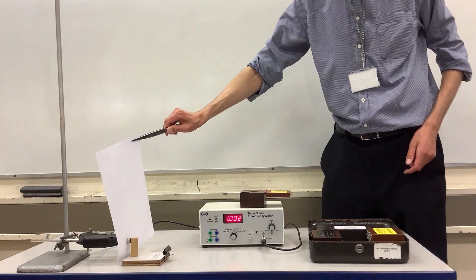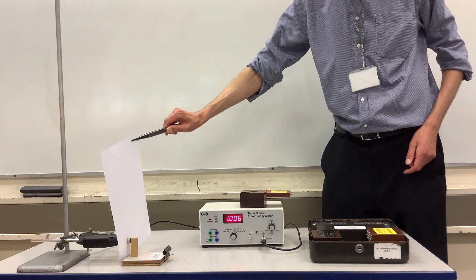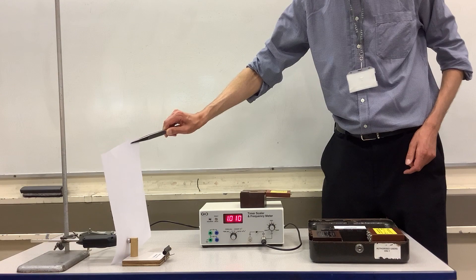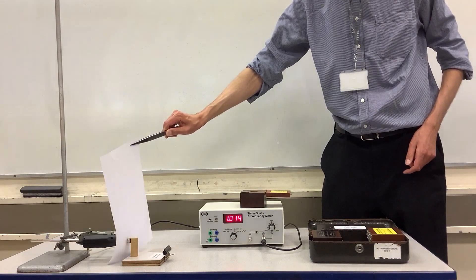So we can see alpha radiation has a low penetrating power. It can only travel a few centimeters in air, and it is stopped by a sheet of paper.